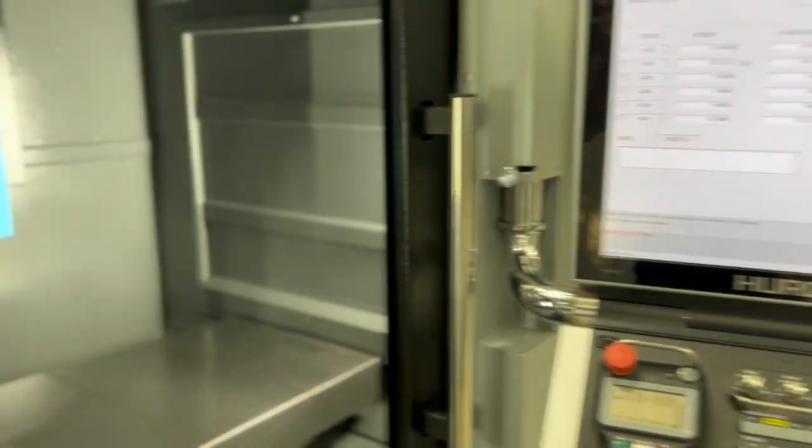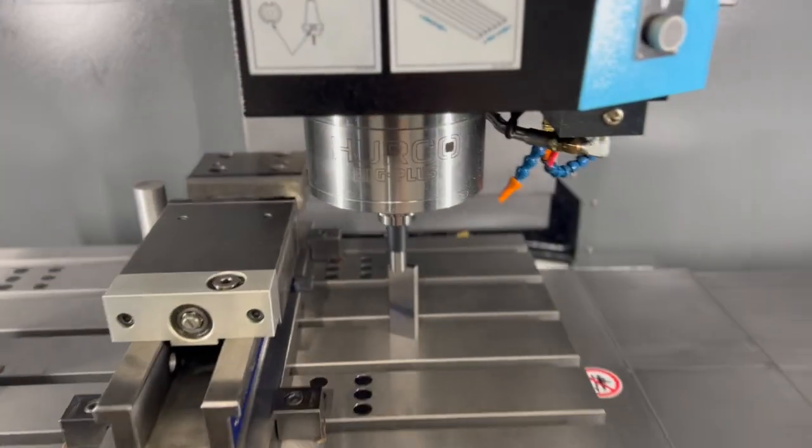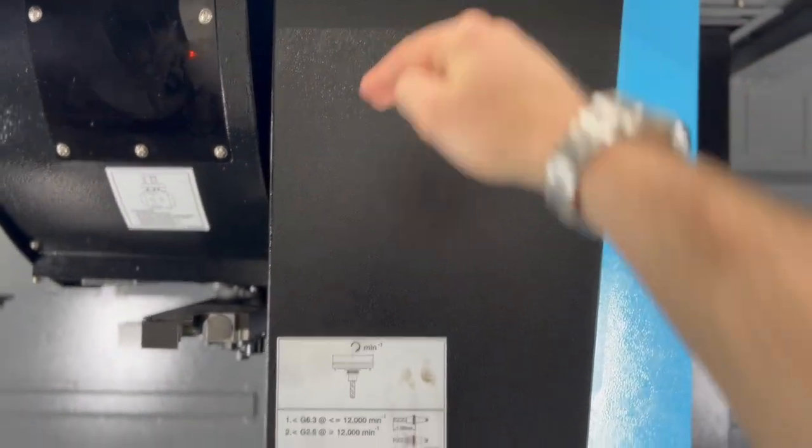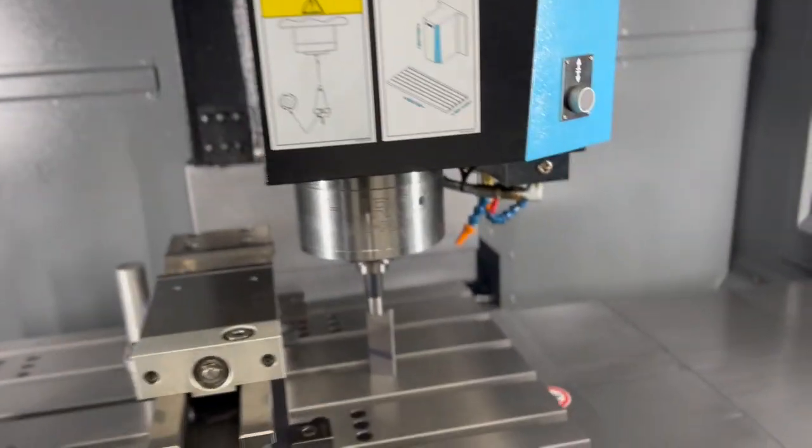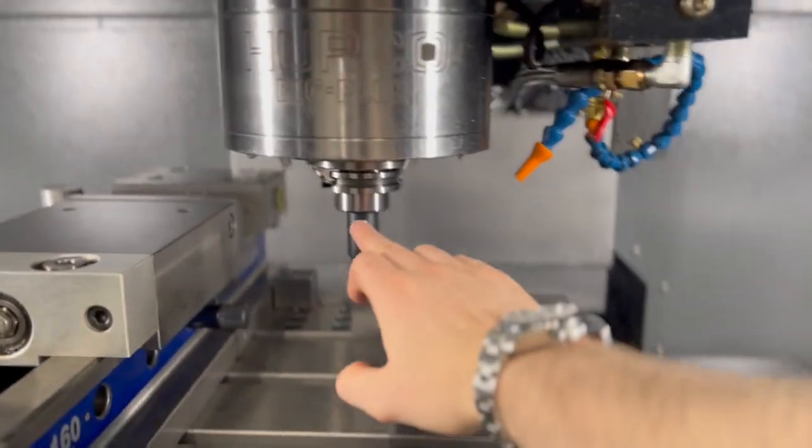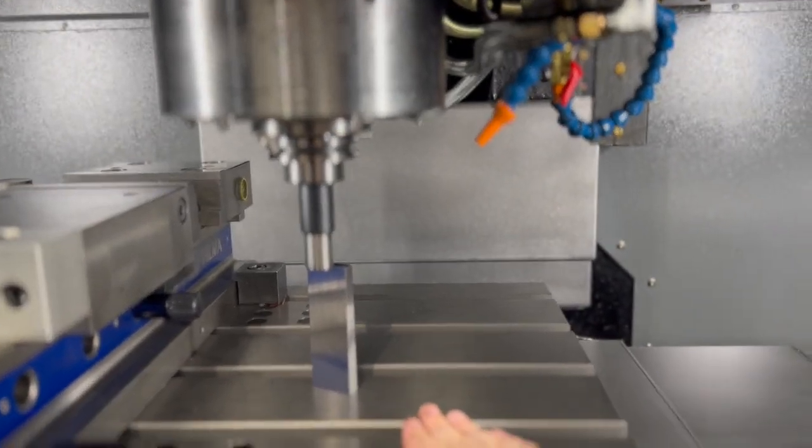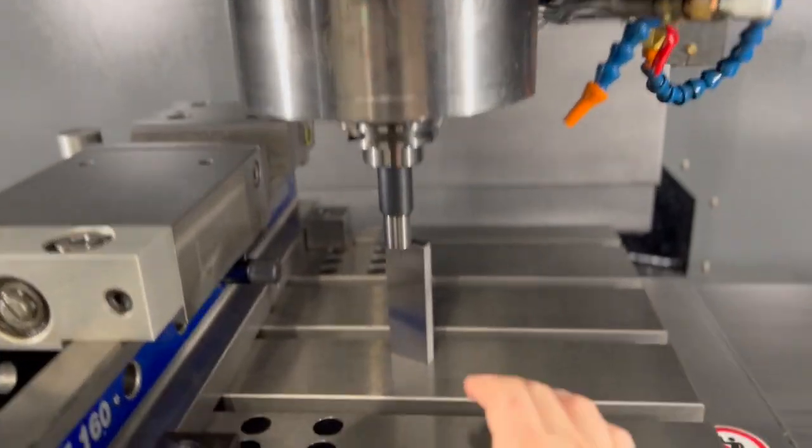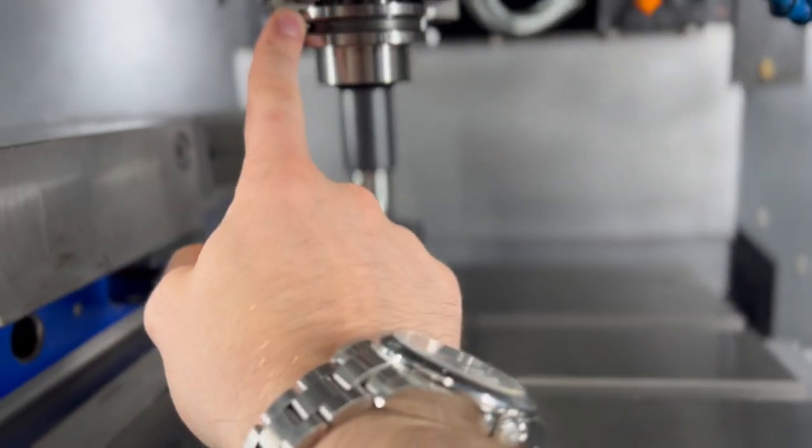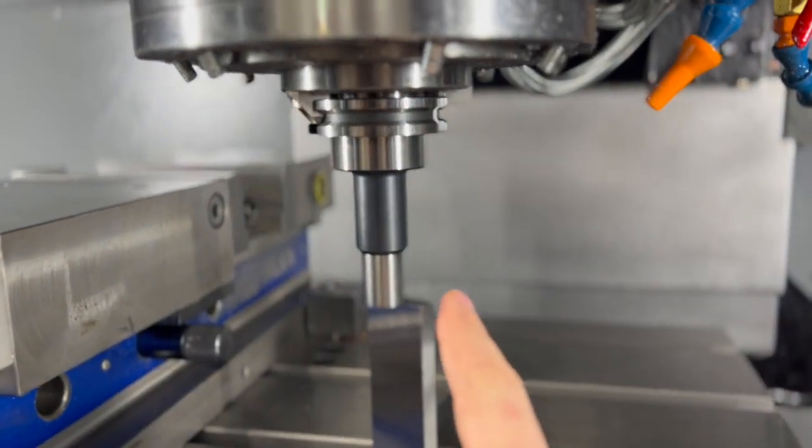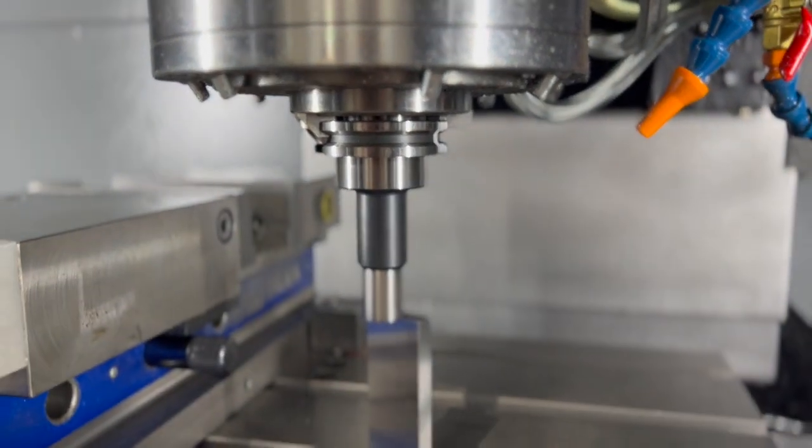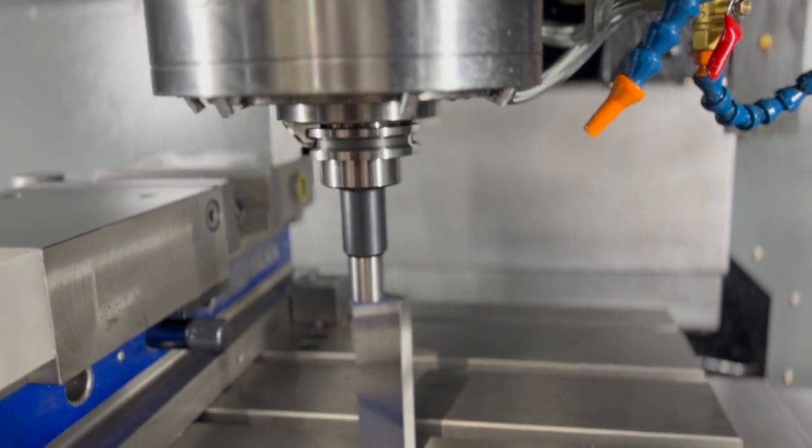So that big minus Z reference figure is actually the top of the table up to our Z home. Now in theory if we could bring this spindle gauge line right down to the bed we would just simply be able to hit store machine position and that would be it. But we can't do that because A there's drive dogs in the way for this tool and B the spindle gauge line isn't actually this line here it's actually slightly inside the spindle just within the taper so you wouldn't be able to bring that down.